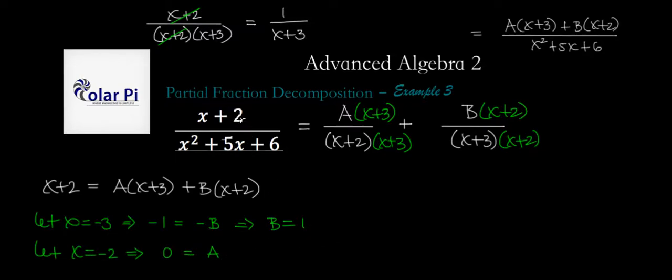Now, from the onset, we said that this was going to equal A over x plus 2 plus B over x plus 3. And we just learned that A has to equal 0, so we're going to see that this is going to equal 0 over x plus 2. And then B has to be 1, and so we're going to get 1 over x plus 3.